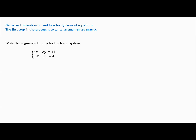The very first step is writing this as what we call an augmented matrix. You make sure your x's and y's are lined up, just like in the elimination method, and your constants are on the other side. The x, y, and z need to be in the same order for every equation, with constants on the other side of the equal sign.